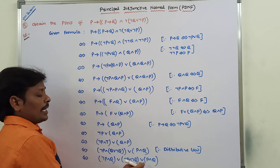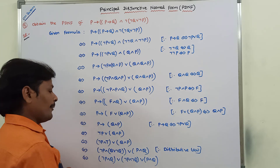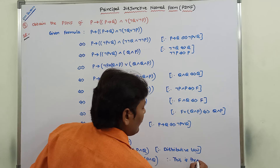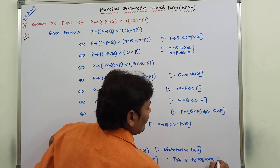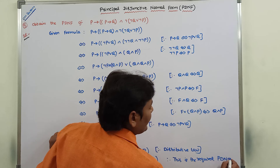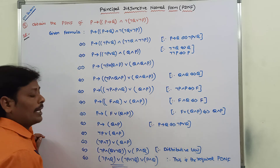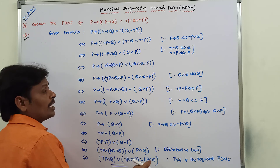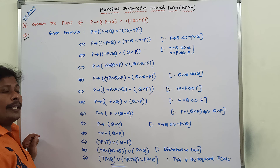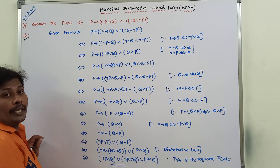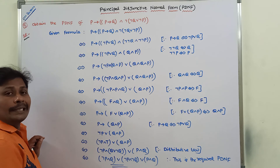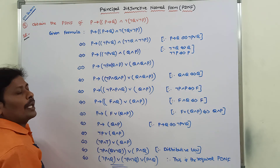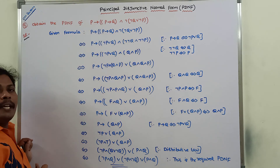These main terms are connected by using OR connective. Therefore this is the required PDNF. It is the required PDNF because three main terms — (negation P and Q), (negation P and negation Q), and (P and Q) — are connected by the OR connective, that is a disjunction of main terms. This is the required PDNF for the given formula, and this is the procedure we follow for getting the equivalent PDNF.